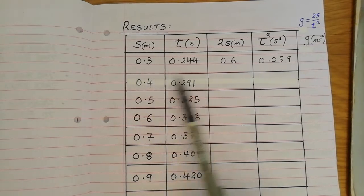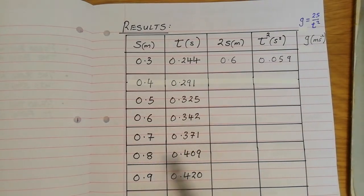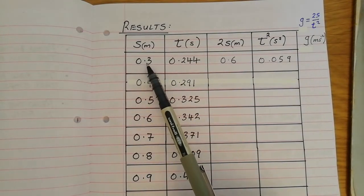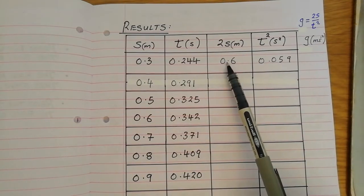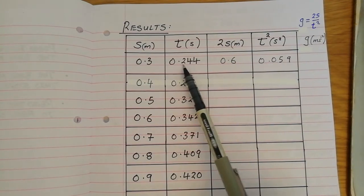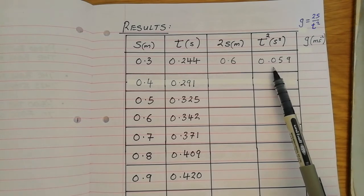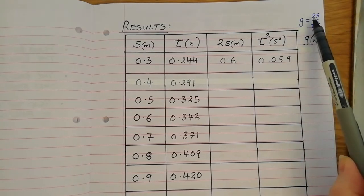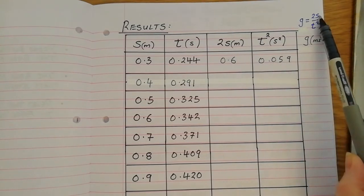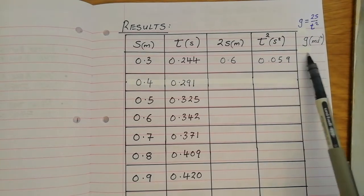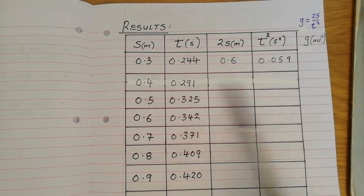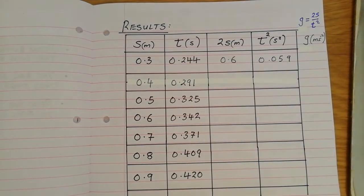And what I would expect you to do now is, for each set of data, and there's one, two, three, four, five, six, seven sets of data, to double the distance, that's the very easy part, to square the time, that's reasonably easy as well, and then perform the calculation 2s over t squared to calculate the acceleration due to gravity for each of the seven sets of data.